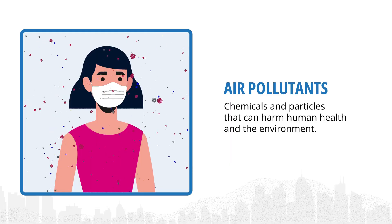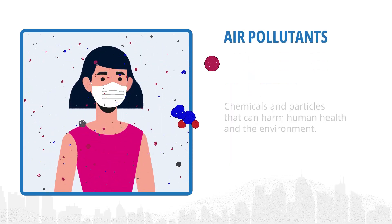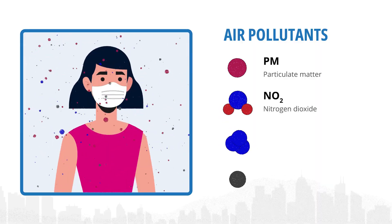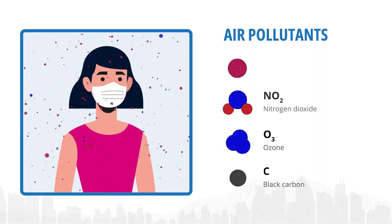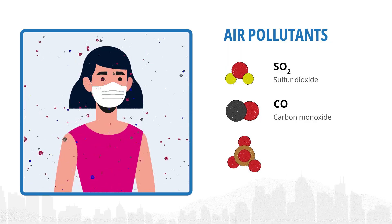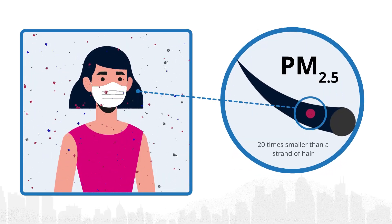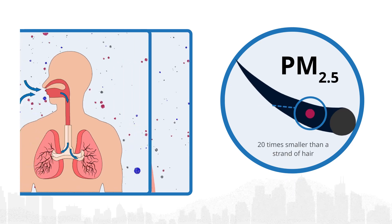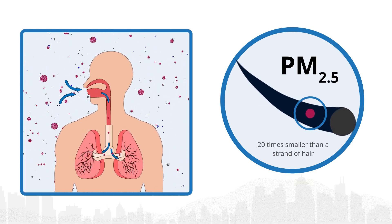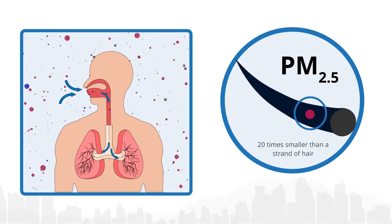Air pollutants are chemicals that can harm human health and the environment. These include particulate matter or PM, nitrogen dioxide, ozone, black carbon, sulfur dioxide, carbon monoxide, and methane. PM 2.5 particles that are 2.5 microns or less in diameter can penetrate our lungs and cause negative health effects due to their tiny size, which is 20 times smaller than a strand of hair.